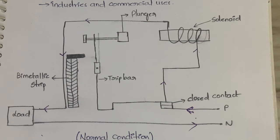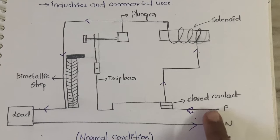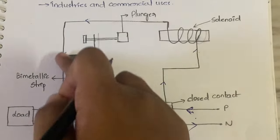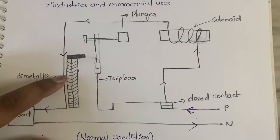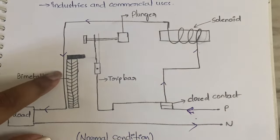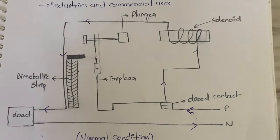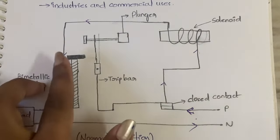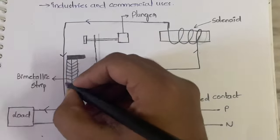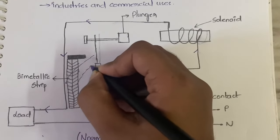When there is a slow increase in current, whenever excess current flows through the bimetallic strip, the strip will get heated up. Metals expand on heating, so the bimetallic strip will expand and bend — it will deflect. When it bends, it will hit the trip bar. The bimetallic strip bends in this way and comes to strike the trip bar.